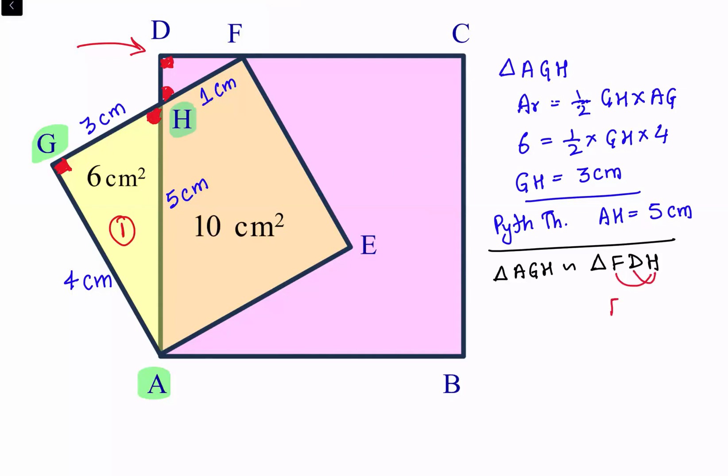I am taking FH upon DH, so correspondingly I'll take AH upon GH. Now if we equate them, let's put the values. AH is 5 centimeter, so it's 5 upon 3. FH is 1 and DH we have to find.